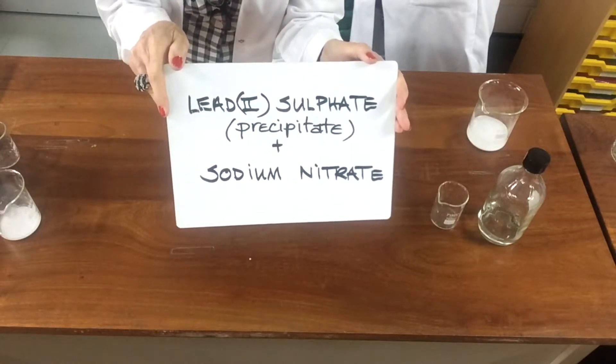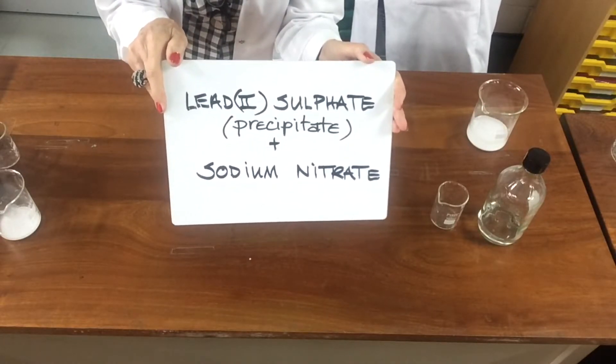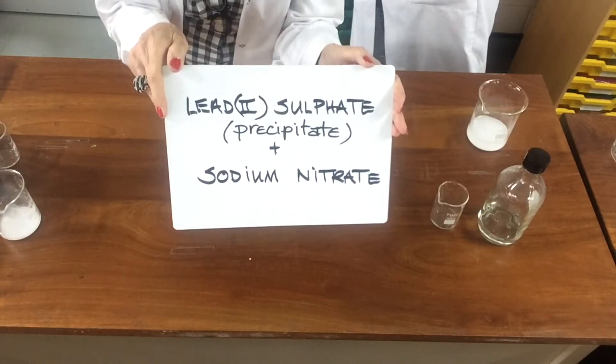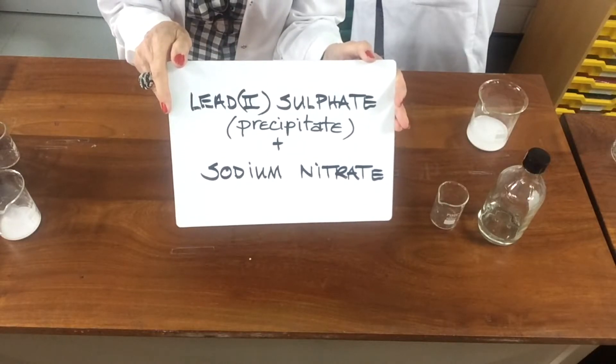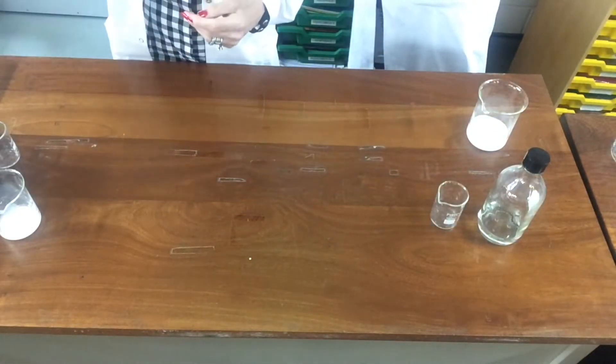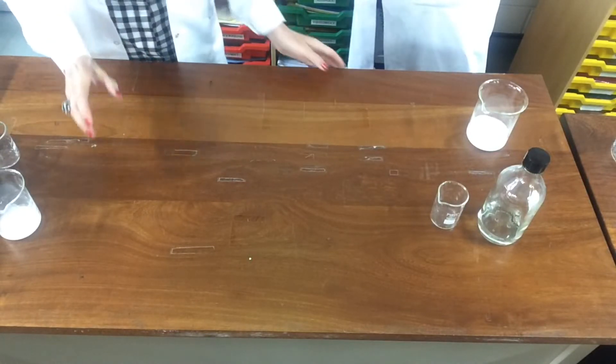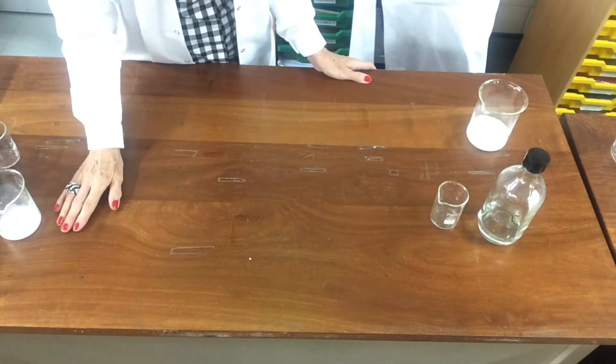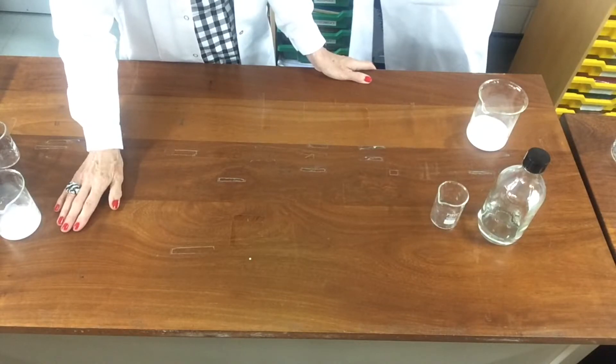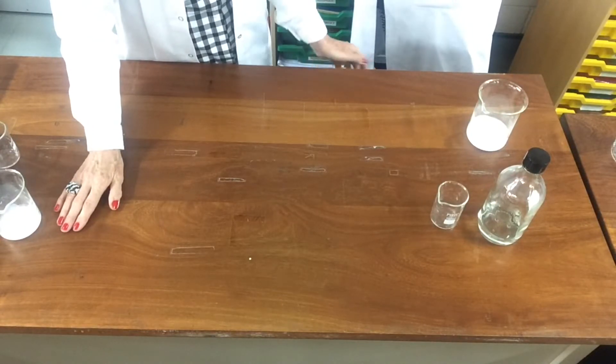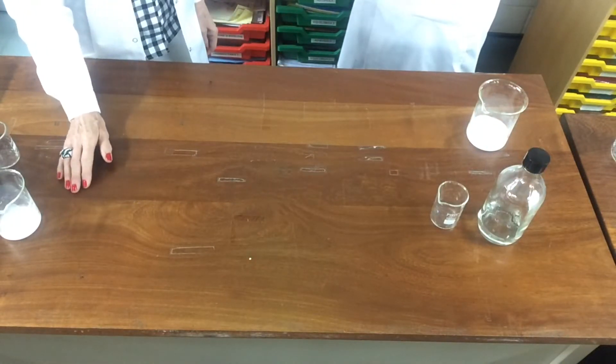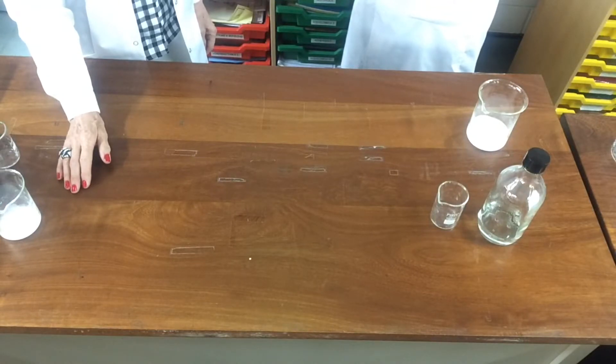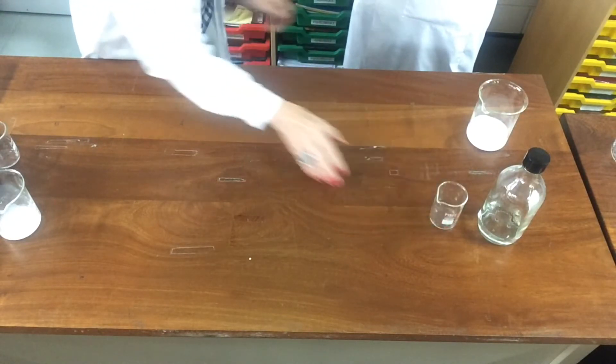Now the lead sulphate is an insoluble solid, which means we can separate it by filtration. And once we have actually separated our lead sulphate, then we wash the solid with distilled water. Dr. Pauline, why do you think we'd wash the solid with distilled water? We'd wash the solid with distilled water because we want to remove the other soluble salt product, which will be attached to the solid product. Perfect.